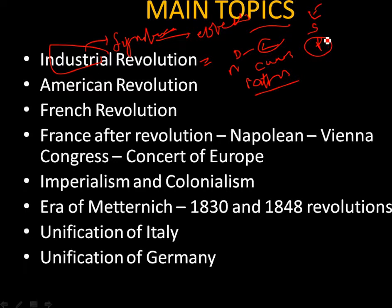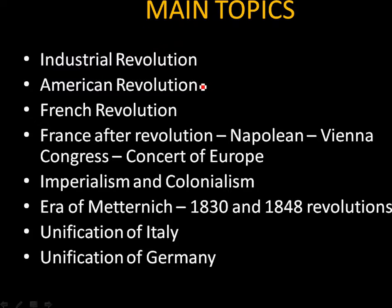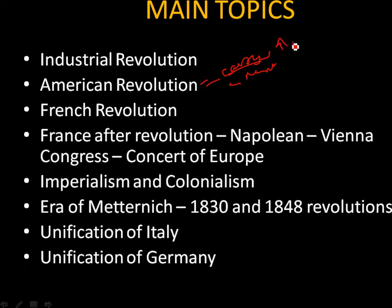Coming to the American Revolution, we will cover the main causes for the outbreak of the American Revolution, the results, the causes for the success of America and the failure of Great Britain, and finally the American Constitution. These are the things I am going to deal with in the American Revolution.